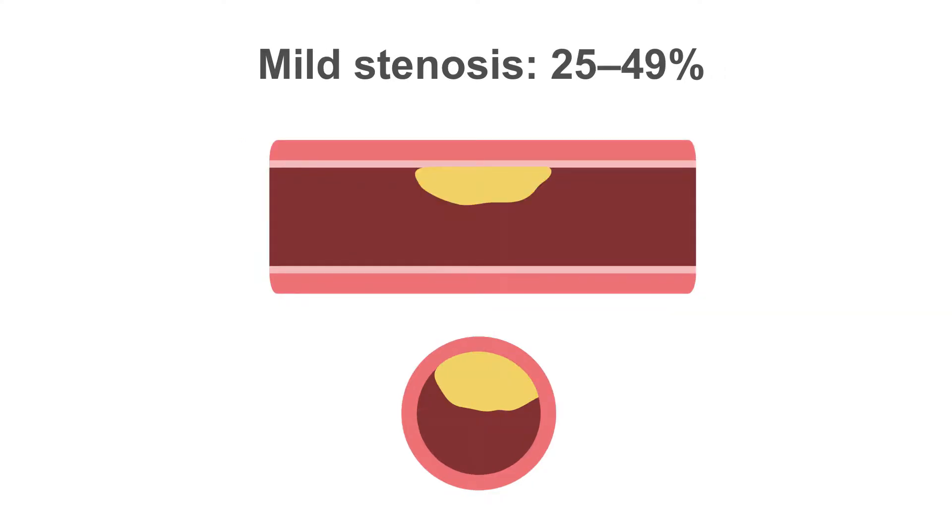Using the same principle, a mild stenosis is one where the plaque occupies 24 to 49% of the lumen. You can see in the on-face image of the vessel that the plaque is covering two quadrants. This is a mild stenosis.